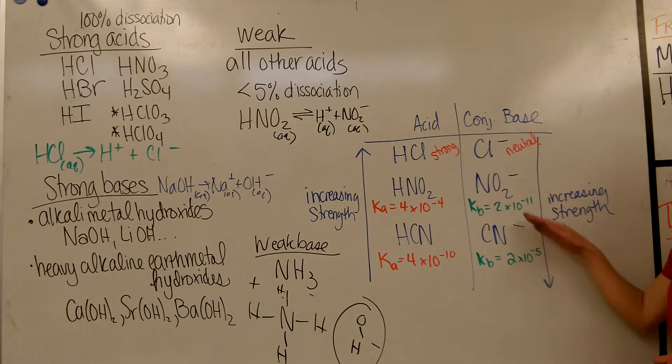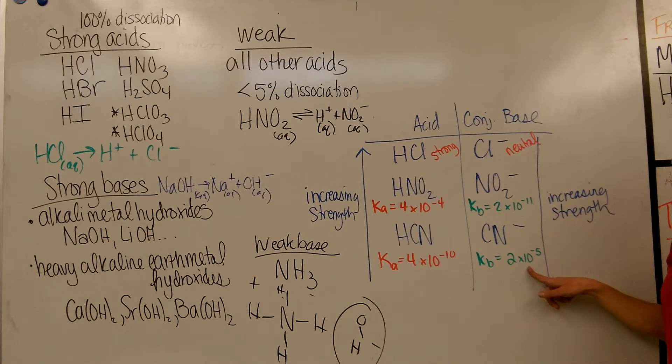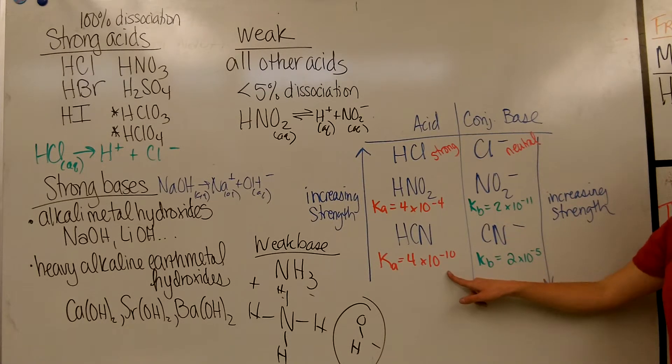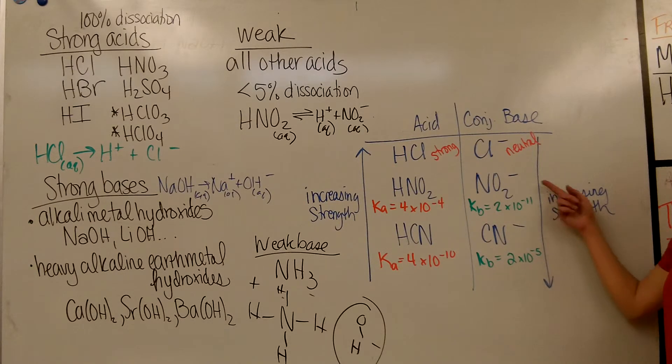So if you go and look at their conjugate bases, you can use their KB value to judge how good of a base it is. The KB value for NO2- is 2×10^-11, the KB value for CN- is 2×10^-5. So notice CN- is a better base than NO2 is, and HNO2 is a better acid than HCN is. So the stronger the acid, the weaker the conjugate base, and vice versa.